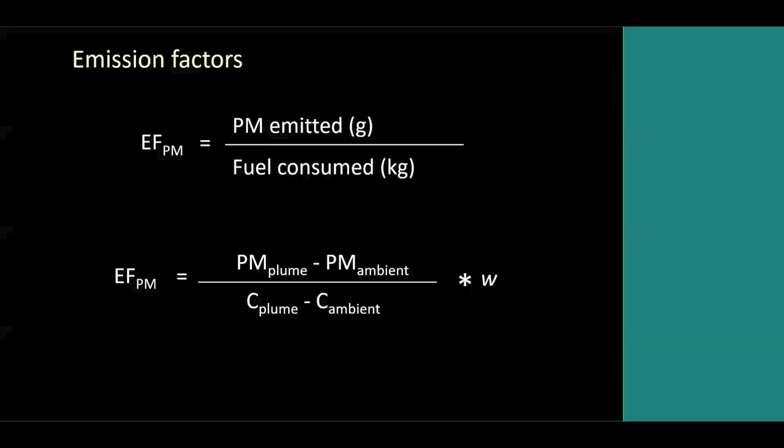Emission factors are ultimately the particulate matter emitted per fuel consumed. They are generally measured using what some call the mass balance method or excess concentration method, where we measure gas and particulate matter in the fire plume and also under ambient conditions before the fire. The difference between PM in the plume and PM ambient is considered the particulate matter produced by the fire. Similarly, total carbon is calculated from carbon dioxide and carbon monoxide — we didn't measure methane and other carbonaceous emissions. The difference between what's measured in the plume and under ambient is considered the emitted carbon dioxide.